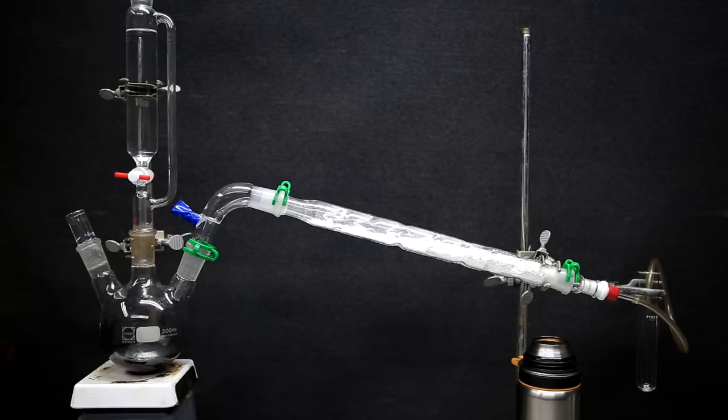So this is my oxygen generator setup and it looks a little bit complicated, but it's actually quite simple. The addition funnel above is filled with three percent hydrogen peroxide and the three-necked round bottom flask has some manganese dioxide in it. The manganese dioxide acts as a catalyst and when the hydrogen peroxide touches it, it breaks into water and oxygen.